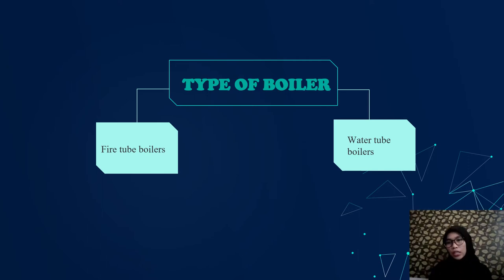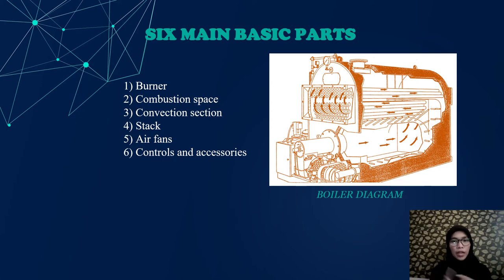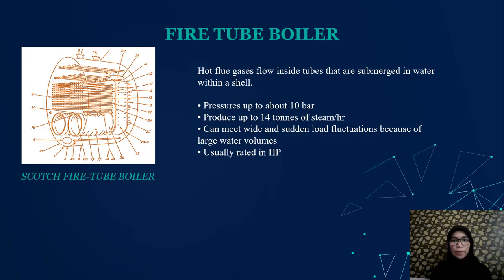The main basic parts of a boiler are: burner, combustion space, convection section, flue, fans, and controls. For a fire tube boiler, hot flue gases flow into tubes that are submerged in water within a shell.